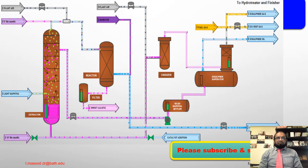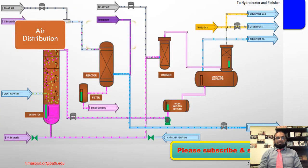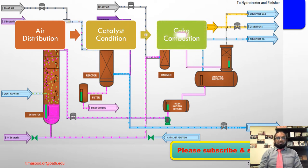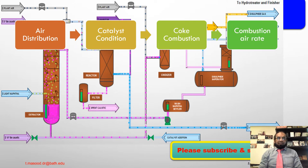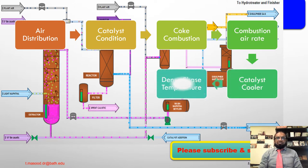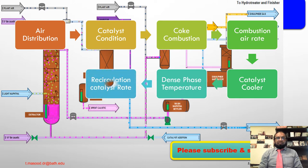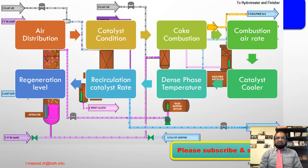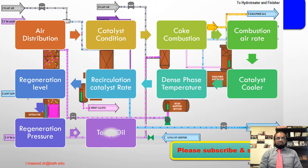Key takeaway points from lecture number two: today we will give highlights on air distribution, catalyst condition, coke combustion, combustion air rate, regeneration level, recirculation catalyst rate, dense phase temperature, catalyst cooler, regeneration pressure, and torch oil.